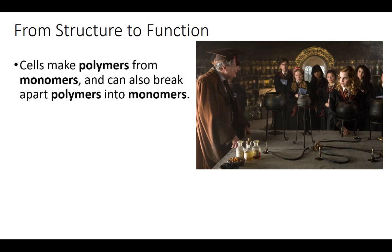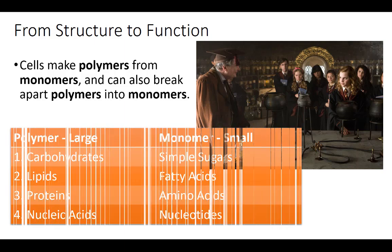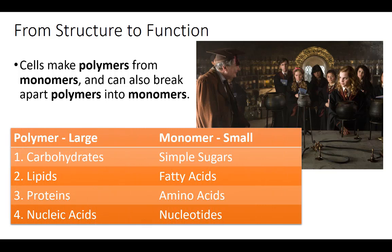Whenever we're making a macromolecule we've got to put it together in the right way. What are the pieces called that we use? A complete molecule is called a polymer, whereas the smaller building parts are called monomers. We can make polymers from monomers and also break apart polymers into monomers. Here's a little chart: a polymer is the larger molecule and a monomer is a small part. For carbohydrates, the monomer is simple sugars.